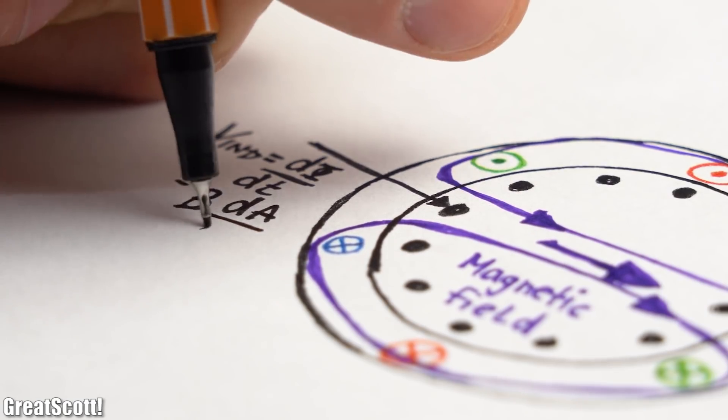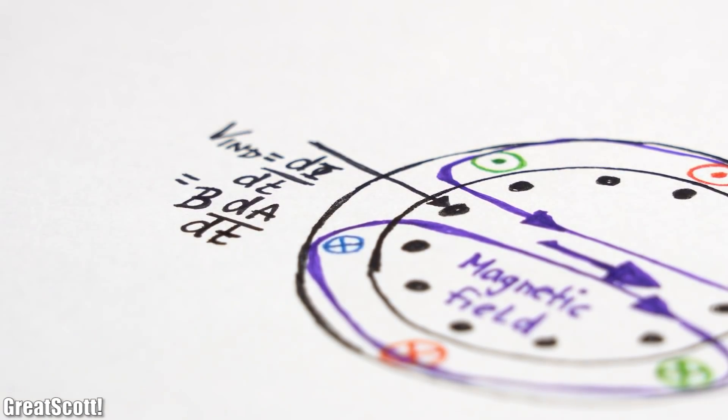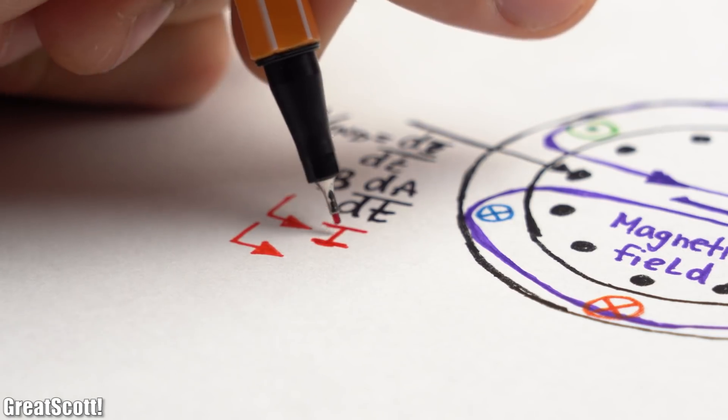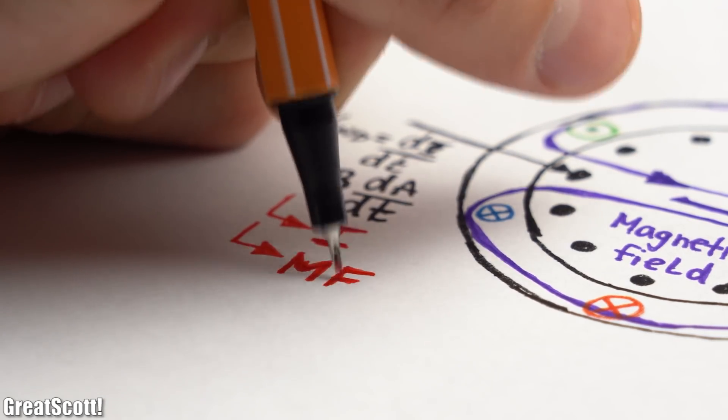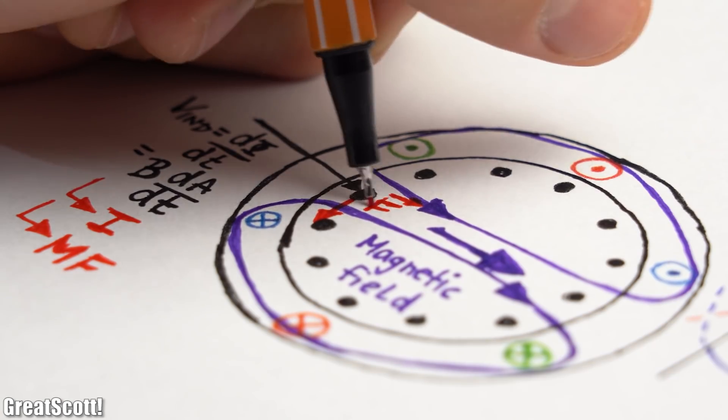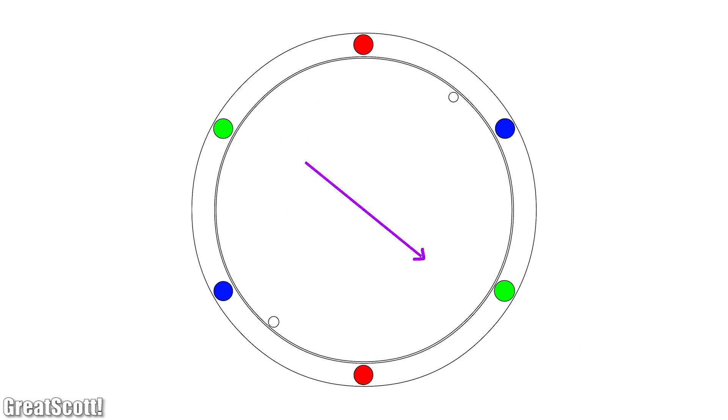Now this rotating magnetic field induces a voltage into the metal sticks of the rotor and since they are all shorted there is a current flowing which once again creates a magnetic field that this time opposes the original rotating field of the stator and thus creates a force which basically pushes the rotor away and lets it spin.